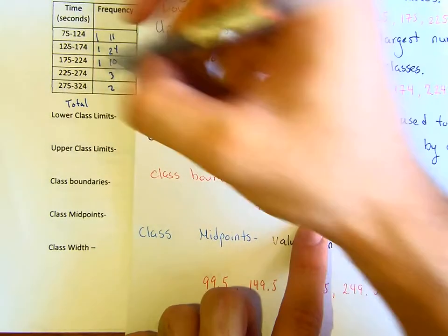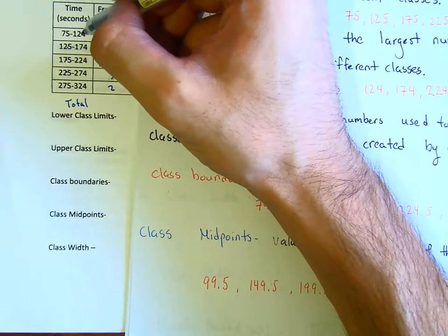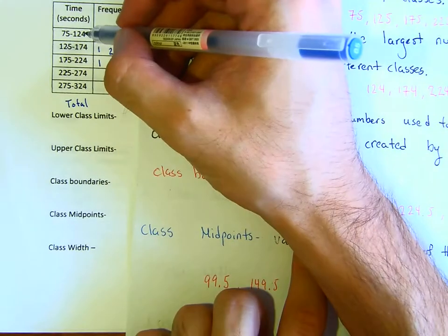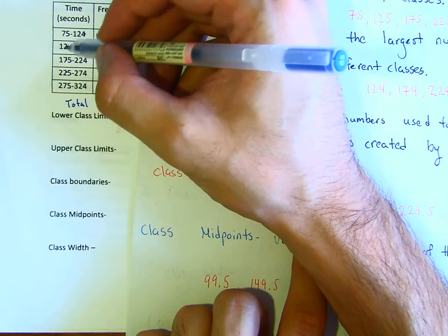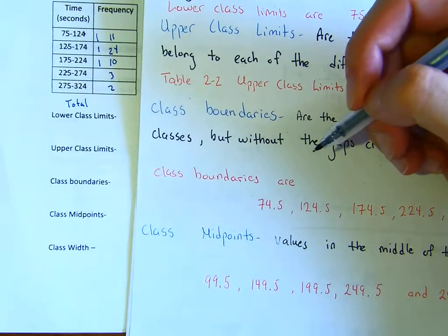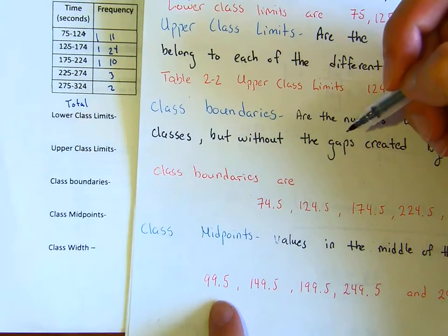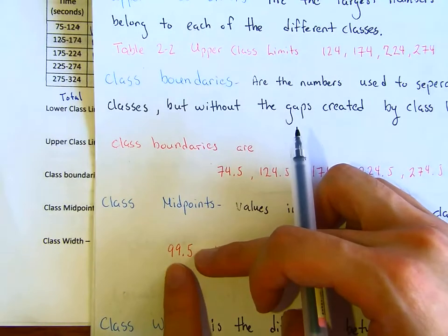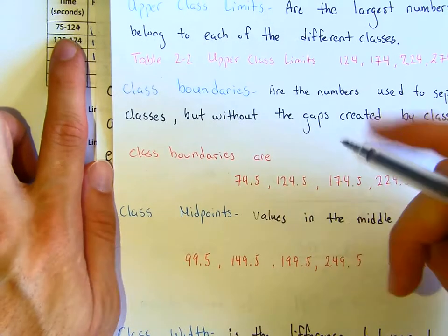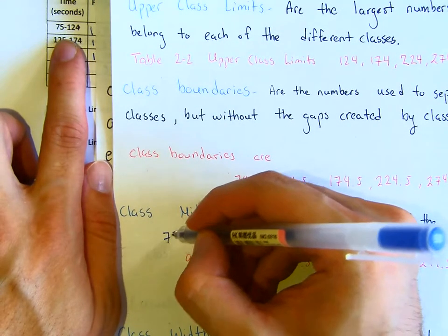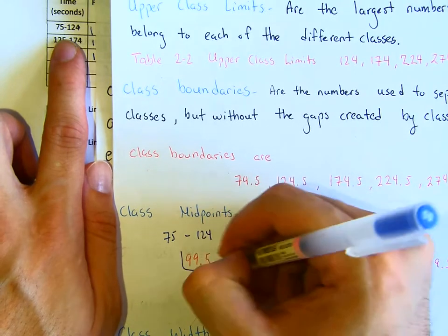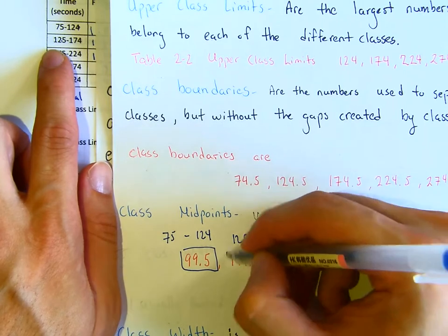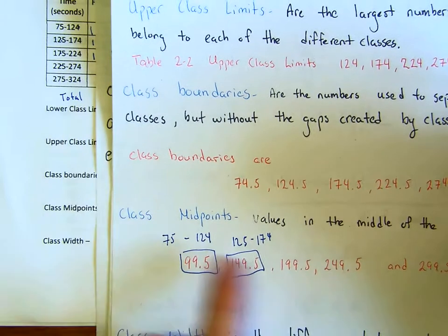Notice the class boundary value — for example, 124.5. We don't actually have 124.5 in the data, but this number separates one integer class from the next — that's what class boundaries represent. The midpoints represent what is in between the class widths: what's between 75 and 124 is 99.5, and what's between 125 and 174 is 149.5 — those are the class midpoints.